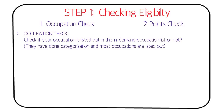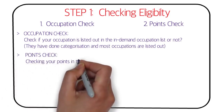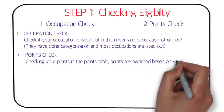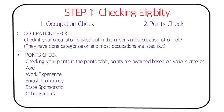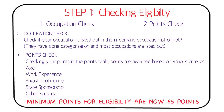The second part is a points check. Points are awarded based on criteria such as age, work experience, English proficiency, state sponsorship, and other factors. You need to calculate your points and check whether you meet the minimum threshold of 65 points.